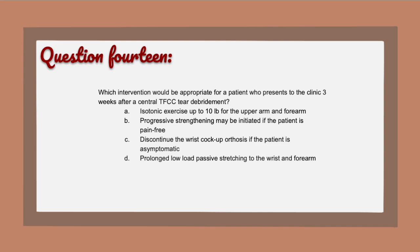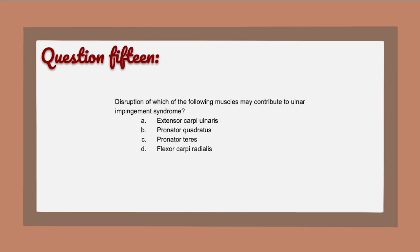Question 14: The correct answer is D — prolonged low-load passive stretch to the wrist and forearm. Typically at three weeks post-debridement, the focus is on regaining mobility. The patient may or may not continue with the wrist cock-up orthosis depending on surgeon protocols, but strengthening typically won't begin until at least eight weeks.